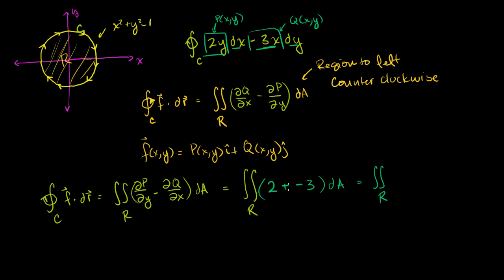And this is equal to the integral over the region. What's this? This is 2 minus minus 3. That's the same thing as 2 plus 3. So it's the integral over the region of 5 dA. 5 is just a constant, so we can take it out of the integral. So this is going to turn out to be quite a simple problem.